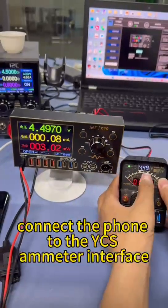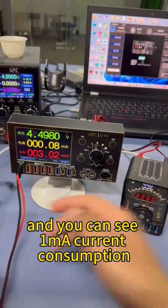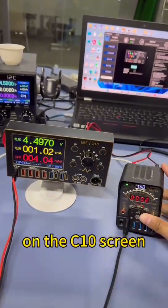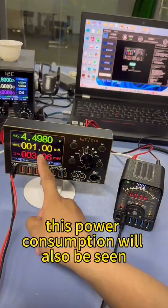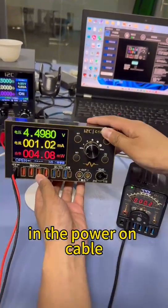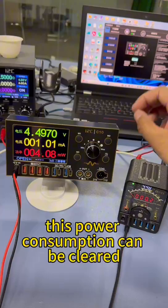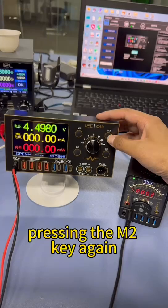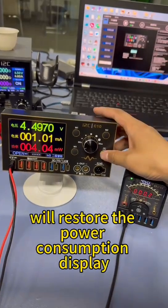Connect the phone to the YCS ammeter interface and you can see a 1MA current consumption on the C10 screen. This power consumption will also be seen in the power on cable. This power consumption can be cleared by long pressing the N2 key. Pressing the N2 key again will restore the power consumption display.